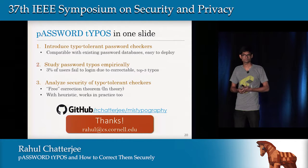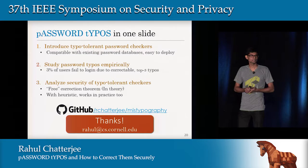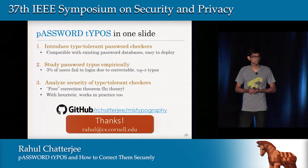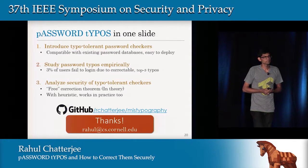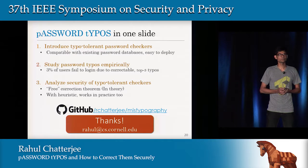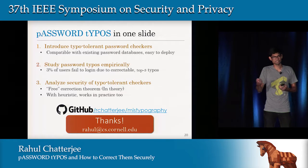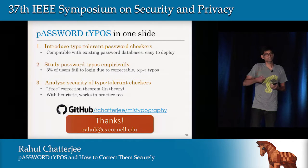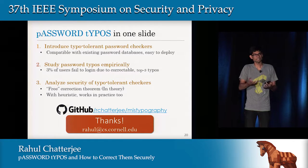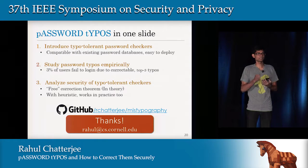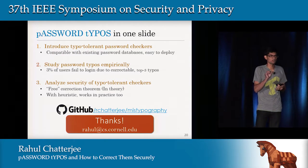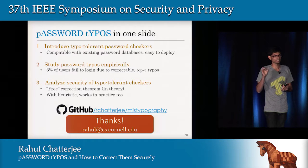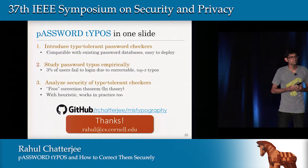Question from Thomas Gross, Newcastle University: How did you instrument Dropbox and measure that typos were present? Did you learn the actual user passwords in that process? When a submitted password is found to be wrong, you correct the password and check again — the relaxed checker. We simulated the effect of the relaxed checker but did not admit logins based on it; we just logged whether the login might have been corrected. We did not gain knowledge of actual users' passwords.